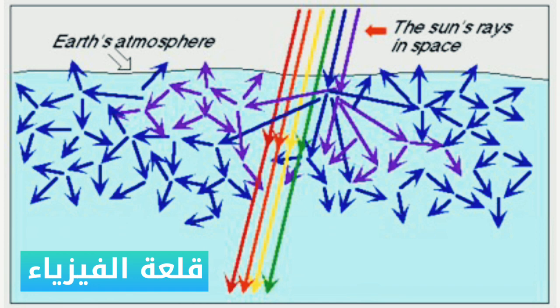This scattering, called Rayleigh scattering, is more effective at short wavelengths, which exactly means the blue end of the visible spectrum.